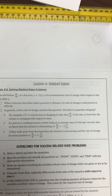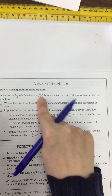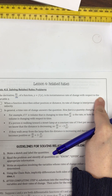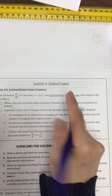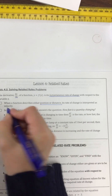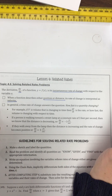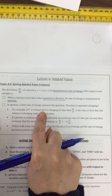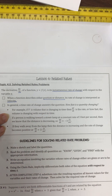Looking at the actual lesson for related rates. The derivative dy/dx of a function y equals f(x) is the instantaneous rate of change with respect to the variable x. When a function describes either position or distance, its rate of change is interpreted as velocity. In general, a time rate of change answers the question: how fast is a quantity changing? For example, if the volume is changing, dV/dt is the rate or how fast the volume is changing with respect to time.